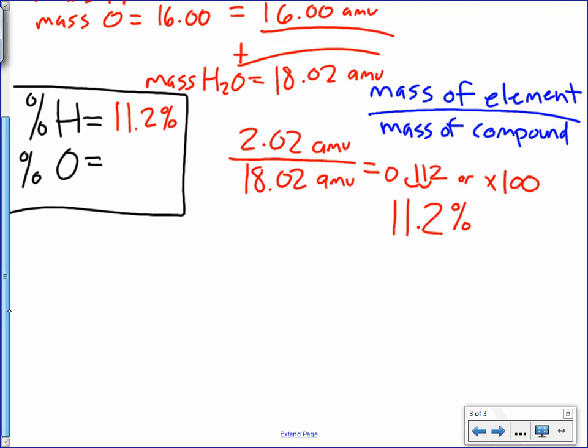Let's just do the same thing for oxygen. We're going to do 16 divided by 18.02, and we will get 88.8%. Three sig figs because we used three sig figs earlier in our measurements. So we'll put that in for our answer.